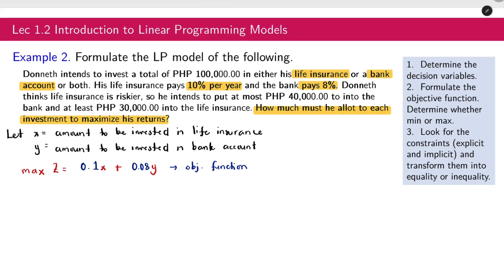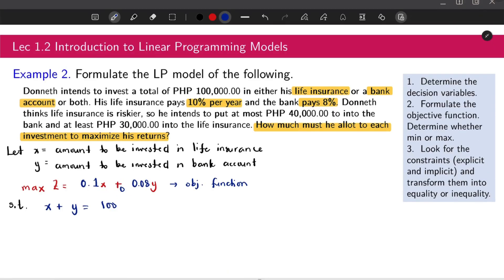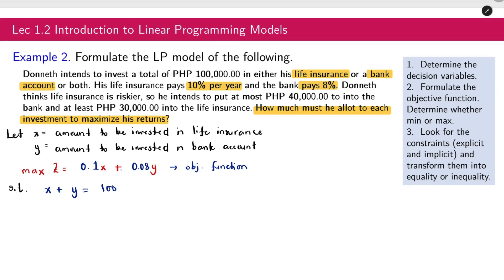Subject to the following constraints. The first sentence, Donet intends to invest a total of 100,000. It means that x plus y is equal to 100,000.